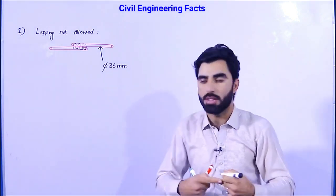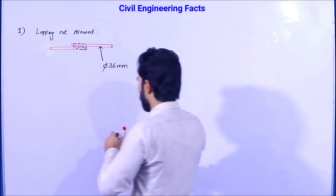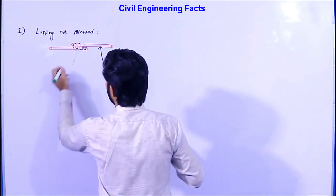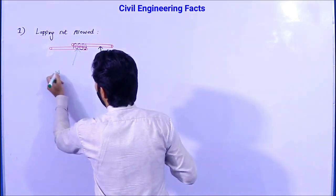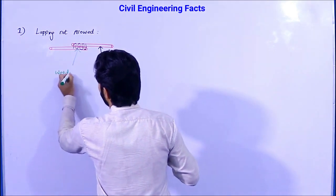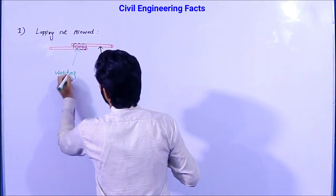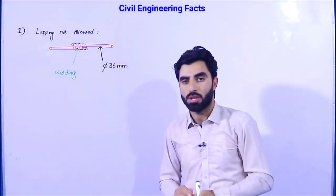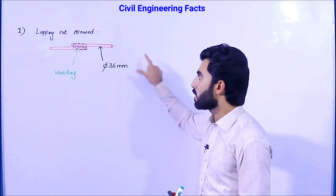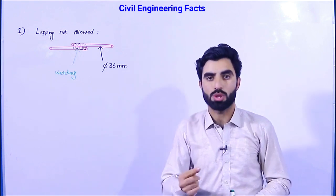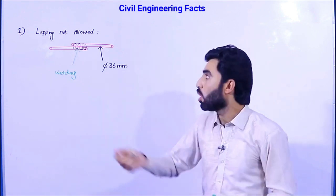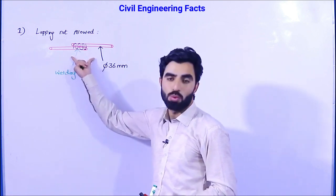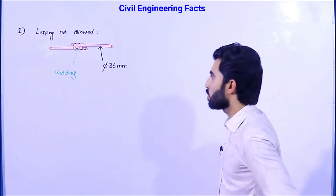For diameters greater than 36 mm, lapping is not allowed. To increase the length instead, you should do welding — weld the bars together for overlapping. This is the first engineering fact which should not be changed.